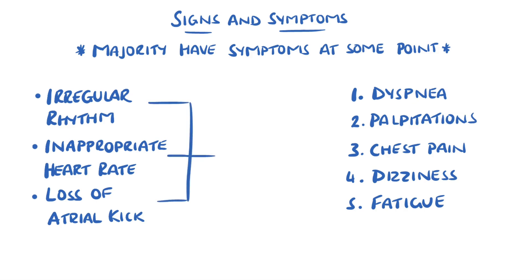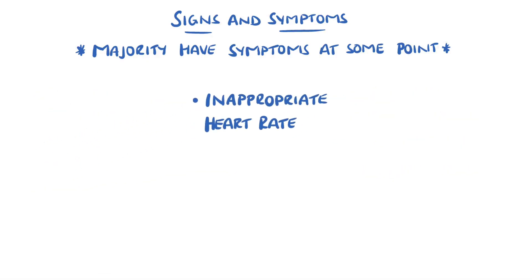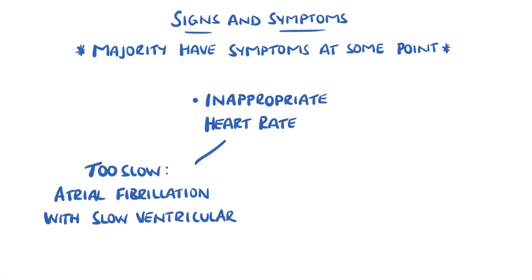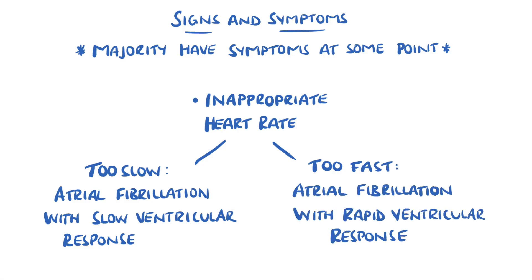Ultimately, there is reduced left ventricular filling and reduced cardiac output. The rate at which the atrial electrical activity is transmitted to the ventricles can lead to an excessively slow or fast heart rate, termed atrial fibrillation with slow ventricular response or rapid ventricular response, respectively.